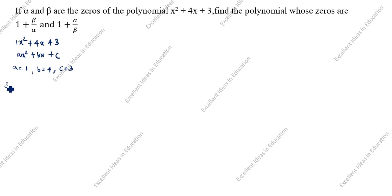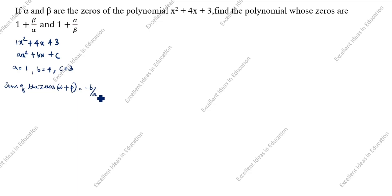First, we will find the sum of the zeros. Alpha plus beta is equal to minus b by a. The value of b is 4, so it is minus 4 by a which is 1. Therefore, alpha plus beta is equal to minus 4.